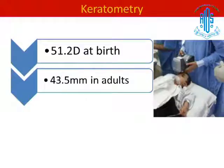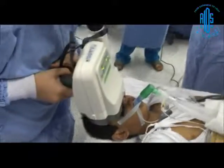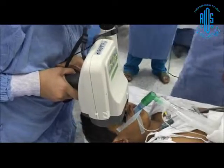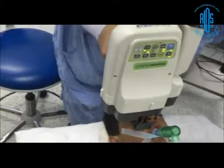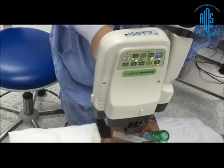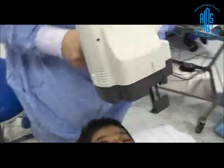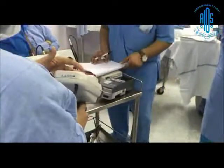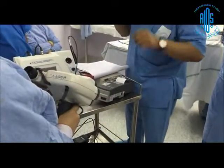As far as keratometry is concerned, at birth the cornea is very steep — keratometry may be as high as 51.2 diopters at birth — and over the next 6 to 12 months it flattens, reaching about 43.5 diopters at around 1 year of age. This video shows how to calculate IOL power in children undergoing examination under anesthesia. A handheld keratometer is used; you should take at least 3 to 5 readings which should be almost identical, and then a printout is taken.